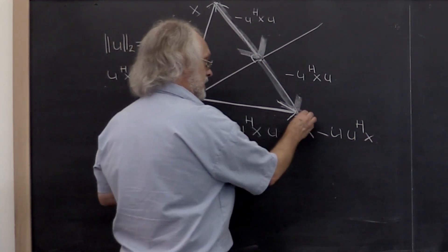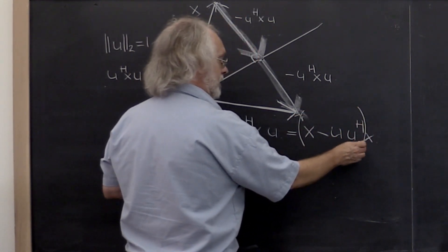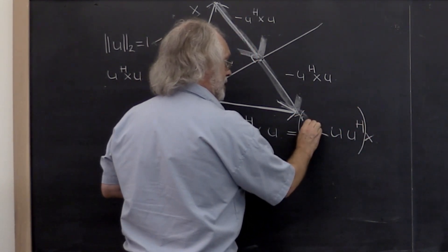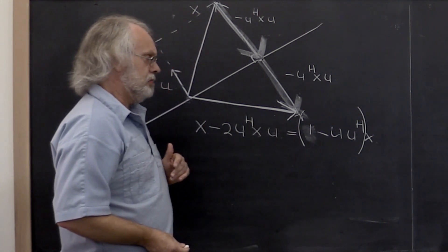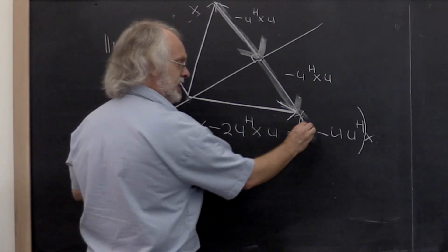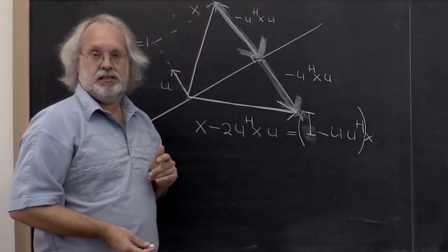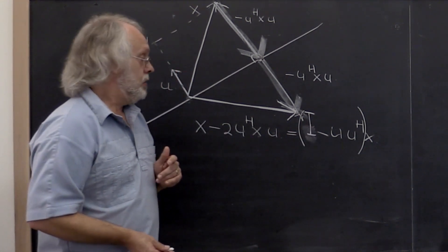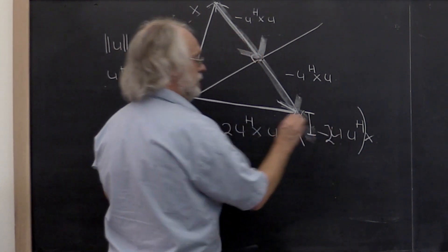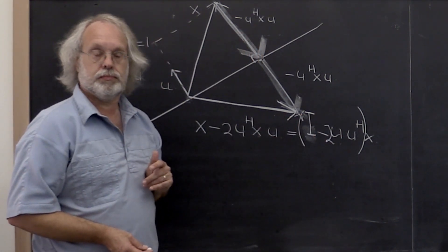It'd be tempting to now say, I can do this and factor out an x. But you can't quite do that. You can do that if you make this the identity. And what am I missing is 2.